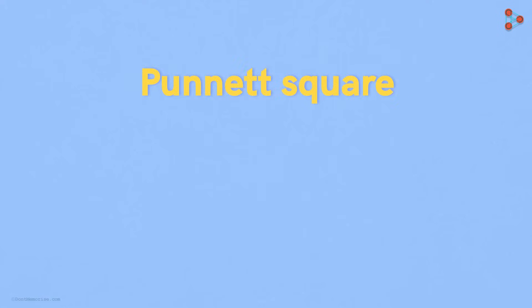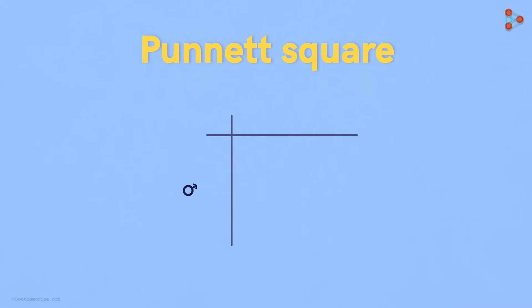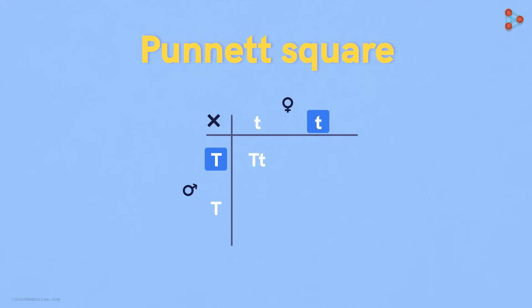Let's understand the technique step by step. The first thing we do is make a table like this. We write the symbols of male and female alleles here — these can be written vice versa as well. This tells us that the maternal alleles will be written here, while the paternal alleles will be written here. So let's begin the crossing. This allele can come together with this one to give us this set of genes in the offspring, and these two can give us this set.